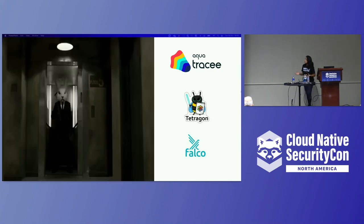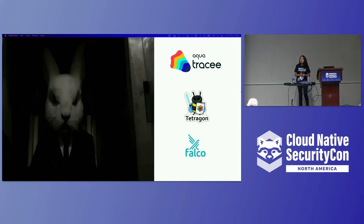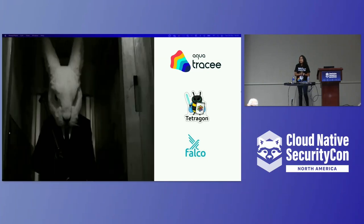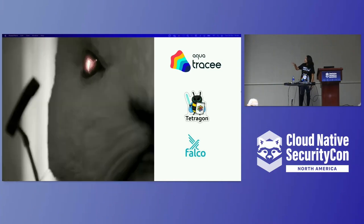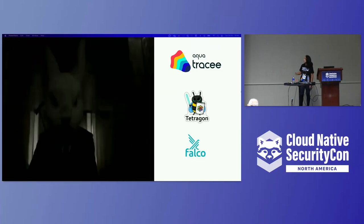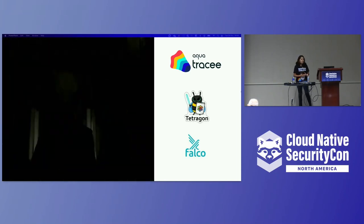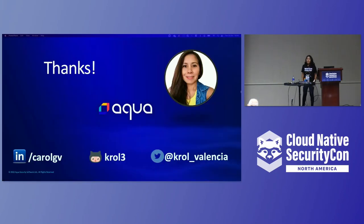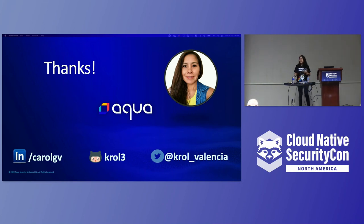I want to give a thank you to the three projects — Falco, Tracee, and Tetragon — because these projects share their knowledge in security. They already have some default security rules that you can use to learn how they are doing it, and I think that is important. Here are my contacts — if you have any doubt, or want to discuss how to improve the rules, I am available. Thank you to all the projects that helped me. Thank you.